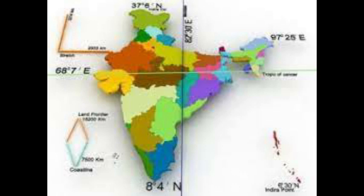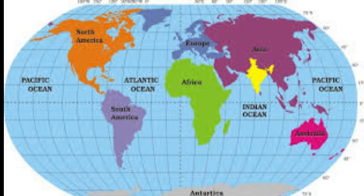The distance between the extreme longitudes from east to west is 2,933 kilometers. So the location of our India is clear — India is located in the Northern Hemisphere and in the Eastern Hemisphere.